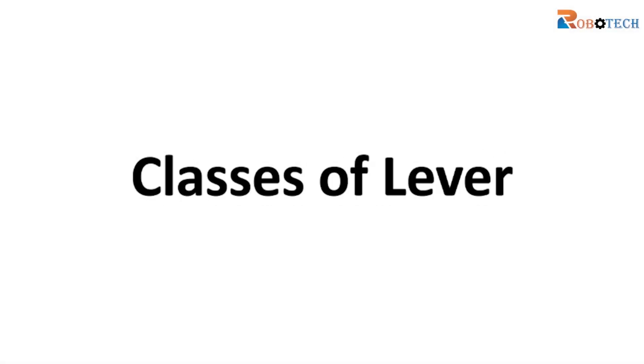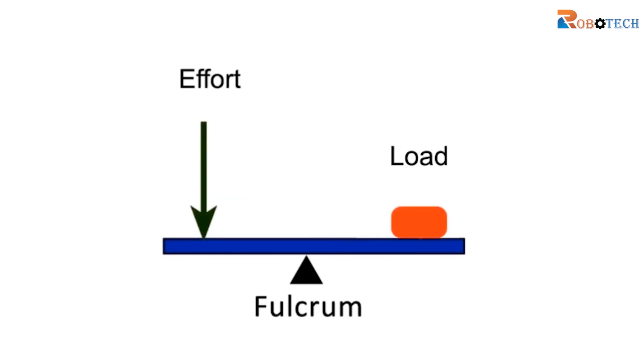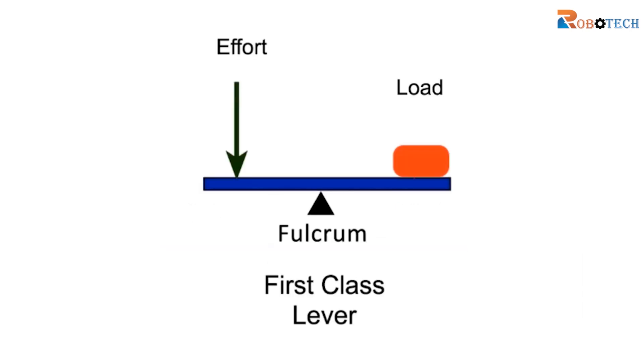Let us explore the different classes of levers. A lever has three main parts: load, effort, and fulcrum. Now here we see a first class lever. In this class of lever, the fulcrum is between the load and the effort.